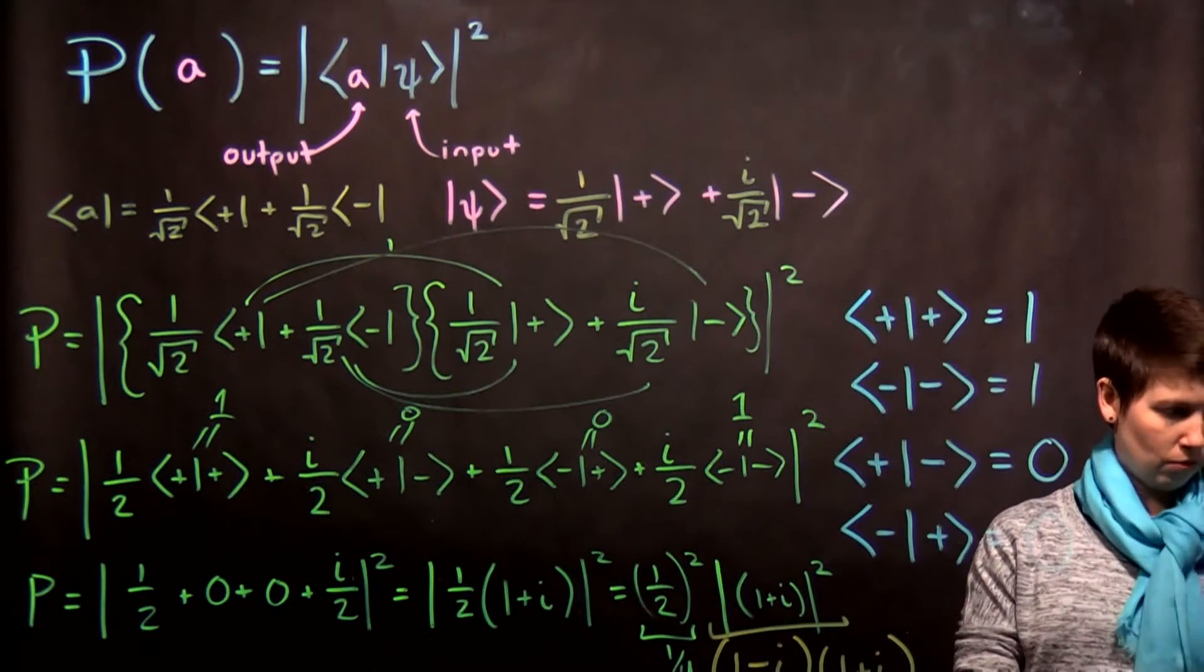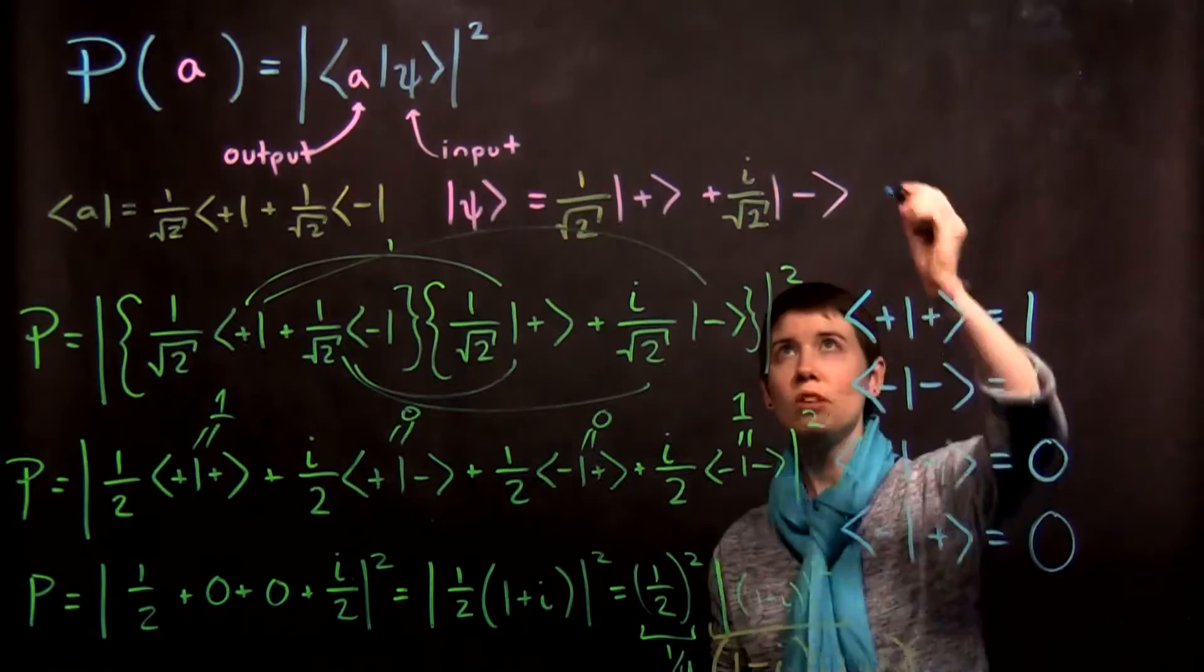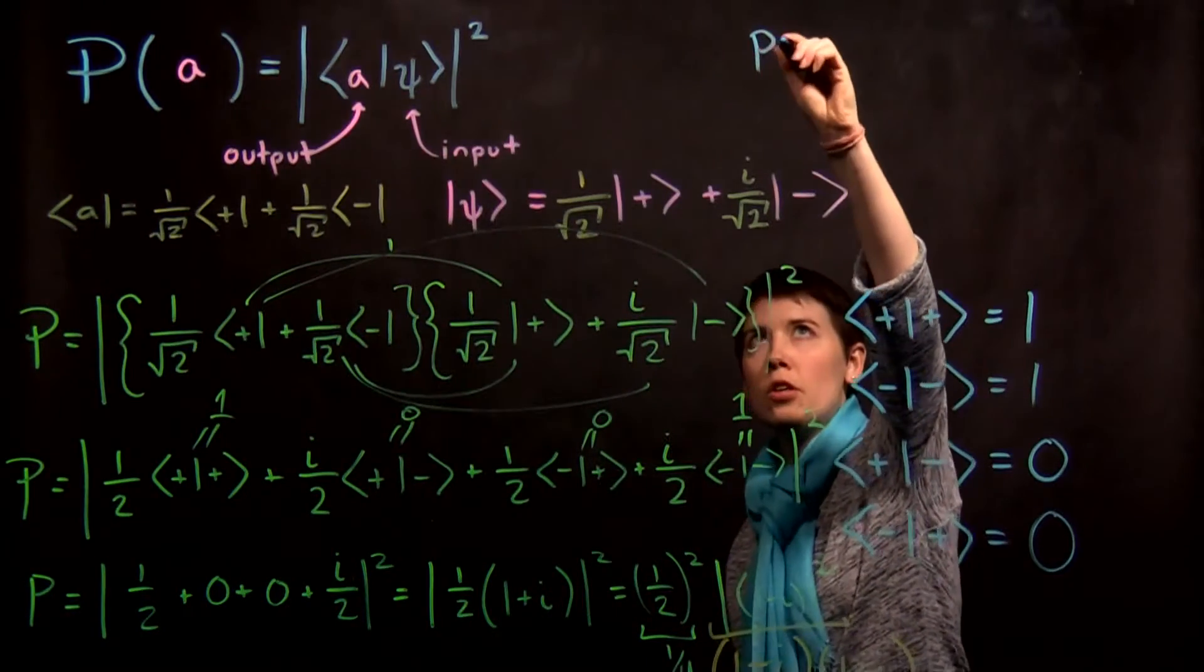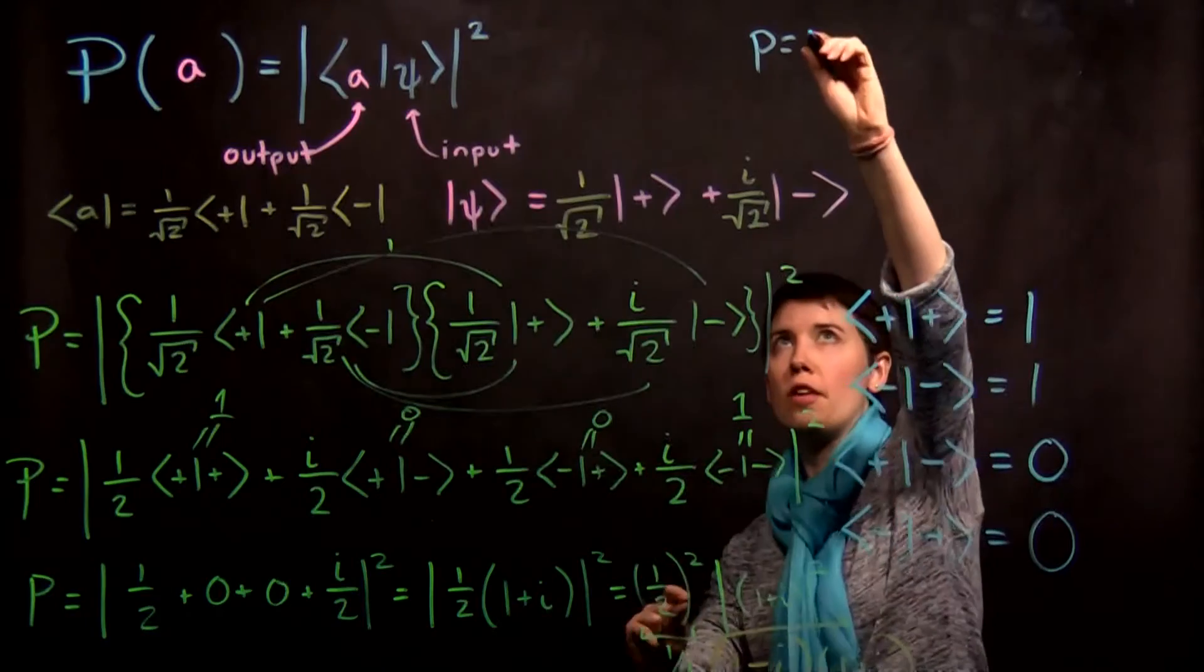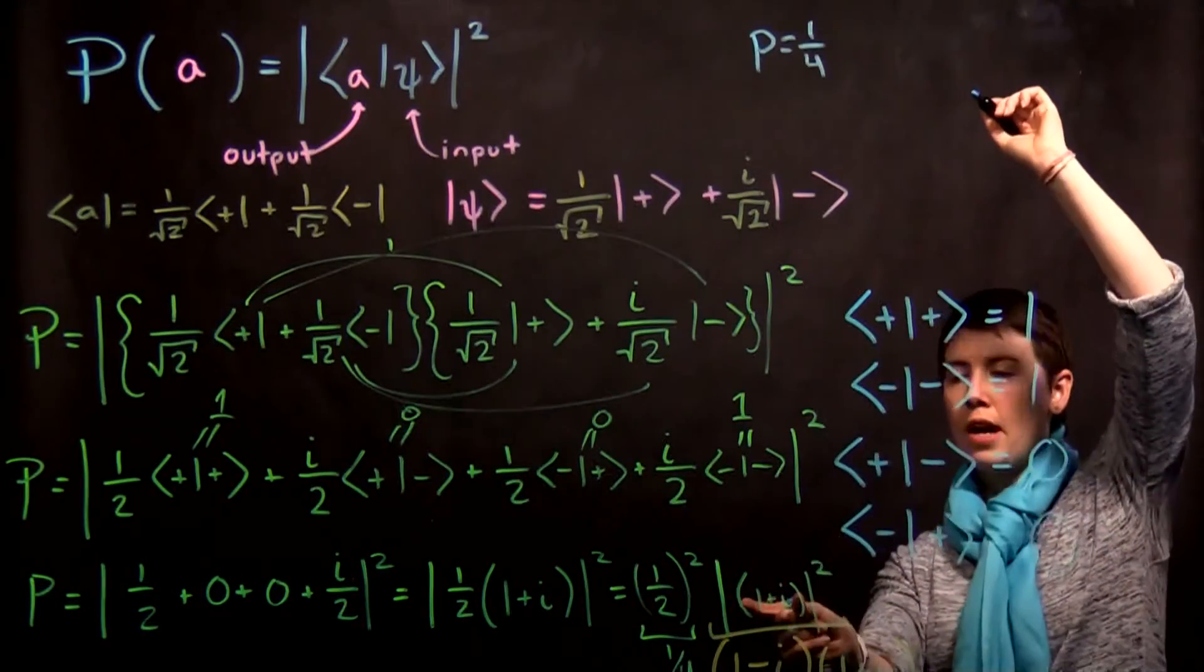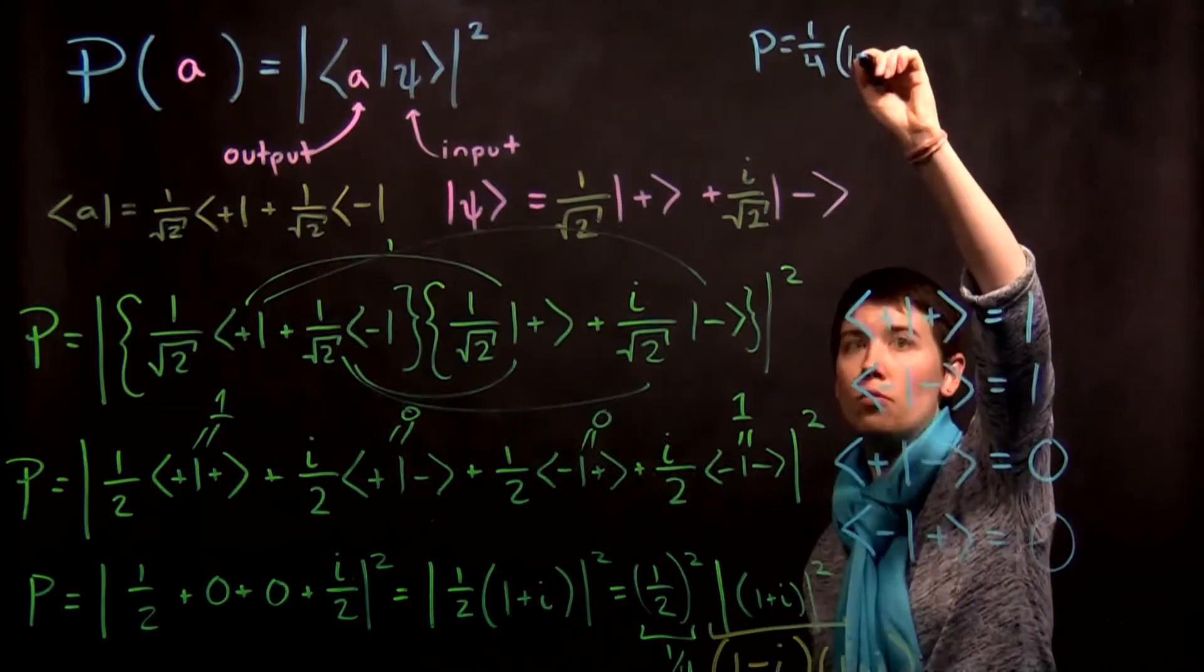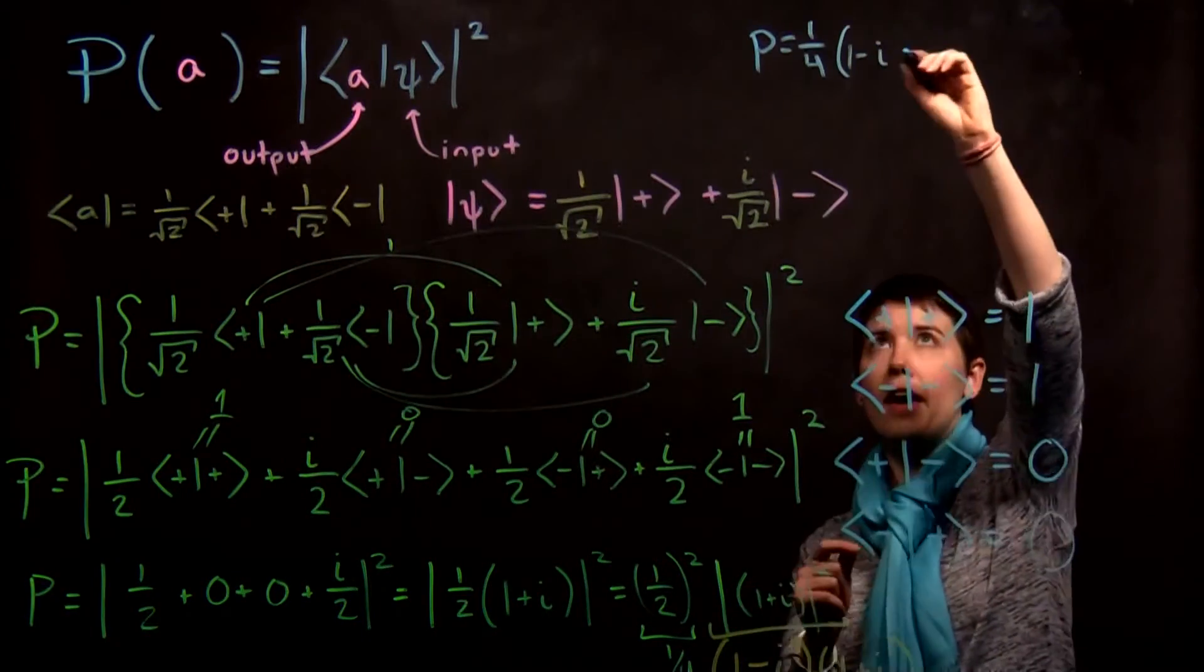Sorry, so I'll move back up here. So again, this one half squared gave me a factor of one quarter. And then this one plus i magnitude squared, first I have the complex conjugate of one minus i. Then I have itself, which is one plus i.